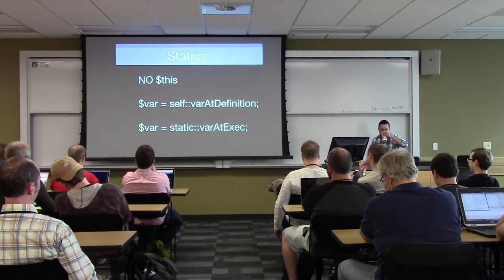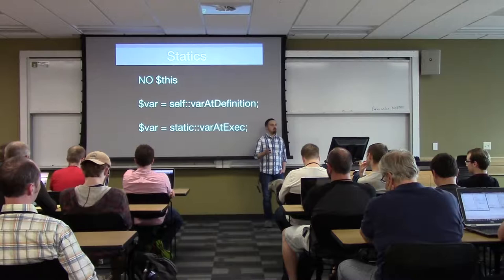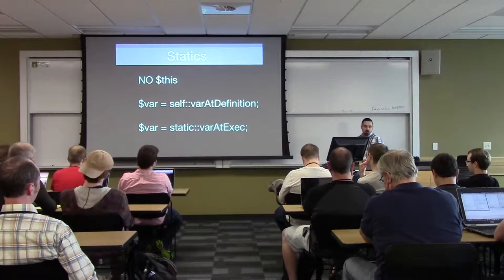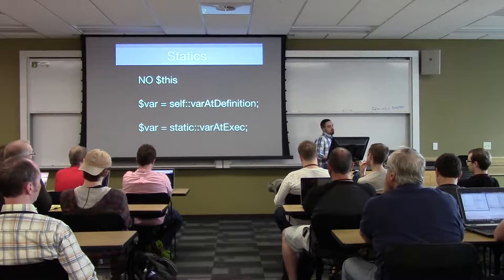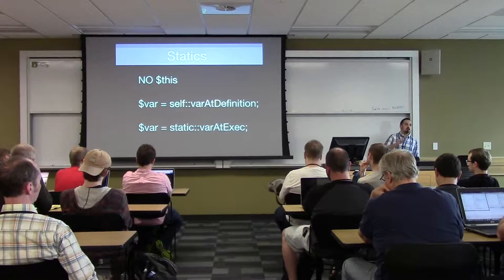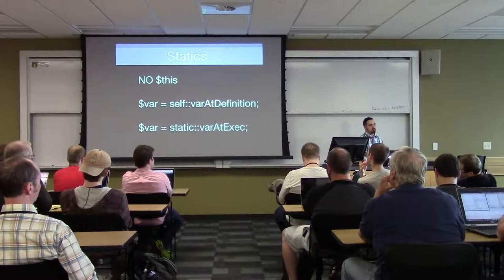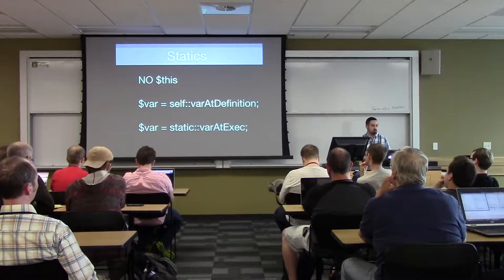Differences with statics: there's no `$this` object, so you can't set `$this->property` and access it throughout the various methods in that class. It doesn't retain state — it's basically a one-off. Some exceptions to that are `self`, which is the variable at definition time — at the point the class was defined, what exists there. There's also `static`, which is the variable at execution time — not when the class was defined, but when it was actually executed in your current code context. If you want to walk through code examples later, I'm happy to go deeper on any of these topics.